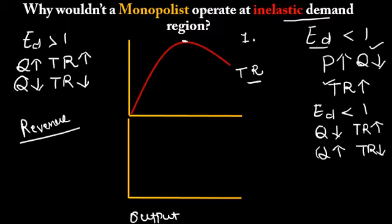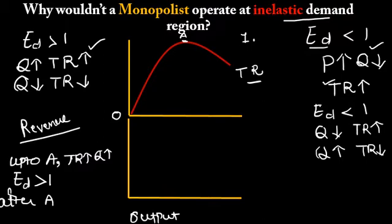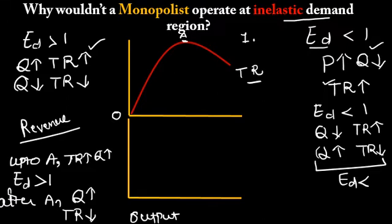As we keep increasing output, total revenue increases from O to point A. So up to A, total revenue increases as quantity increases — meaning it is changing in the same direction, which means up to A, elasticity of demand is more than 1. After A, as quantity increases, total revenue decreases — this is the inelastic region where elasticity of demand is less than 1. So this is the inelastic region and this is the elastic region for the total revenue curve.